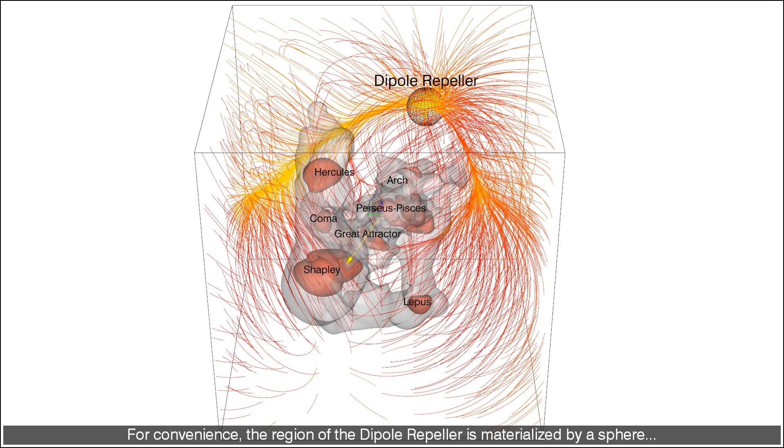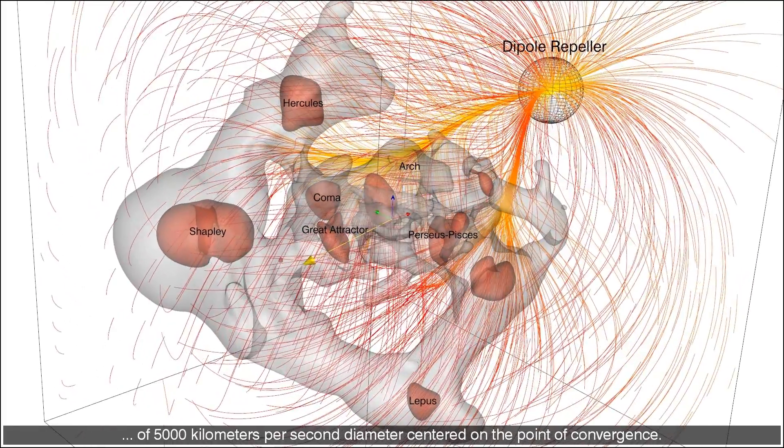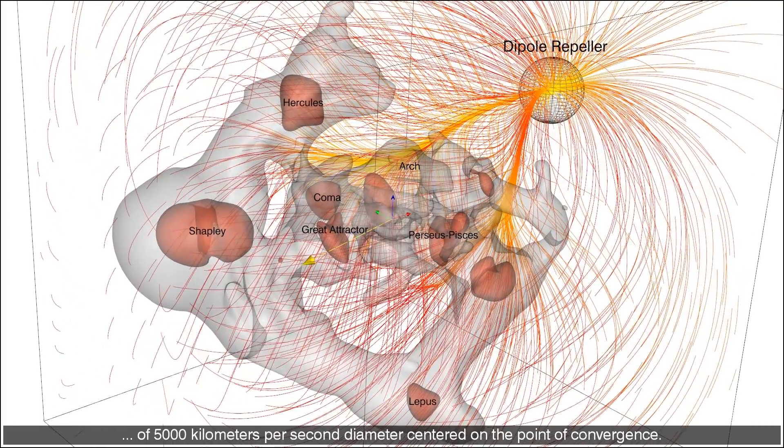For convenience, the region of the dipole repeller is materialized by a sphere of 5000 km per second diameter centered on the point of convergence.